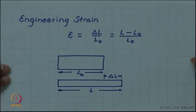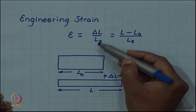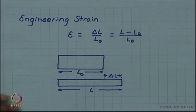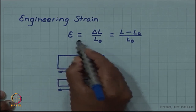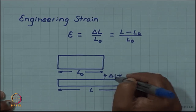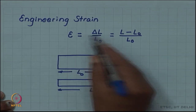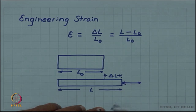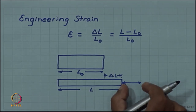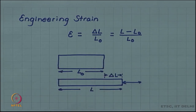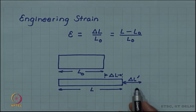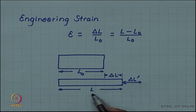Now we look at engineering strain, which is defined as delta L by L naught, i.e., L minus L naught by L naught, where delta L is the increment in length. You can see that engineering strain depends on the original length. If I increment the length by a further delta L prime, this increment is still divided by the original length L naught, even though it is being applied on the current length L. Dividing delta L prime by the current length gives a different value.